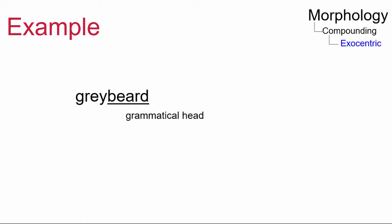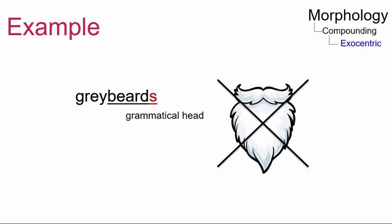In the second example, the grammatical head of the compound is beard, as it takes inflectional markers. However, beard does not define the meaning of the compound. A graybeard is not a type of beard, but rather an old man.